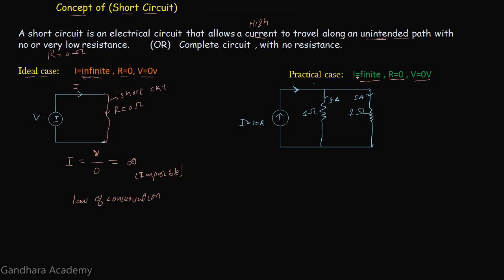To understand the practical case, let's take an example with a current source having a 10 ampere value, connected in parallel with two resistors each having one ohm of resistance. So five amperes of current flows through each resistor. Now when an unintended path occurs between the two nodes of this circuit, the current follows the least resistance path. Since the resistance of the short circuit is zero ohms, all the current follows this unintended path — no more current flows through the resistors — and the current through this unintended path is 10 amperes, which is finite.